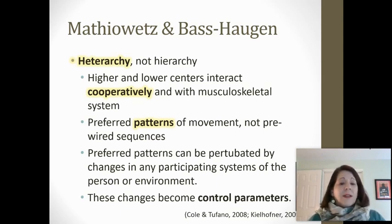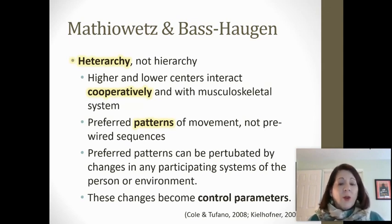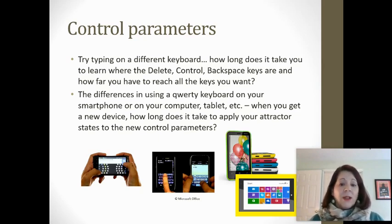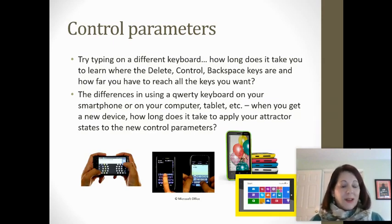The higher and lower centers of our motor system learn to interact cooperatively with our musculoskeletal system. People have preferred patterns of movement, but these preferred patterns can be perturbed or changed by anything in the environment or anything in the occupation we are choosing to do. These changes become control parameters. For example, learning to type on a different keyboard with keys in a slightly different location means learning a different set of movements — and using a QWERTY keyboard on your phone versus your computer requires using your fingers differently even though the keys are in the same location, illustrating the vast amount of brain real estate required to plan our movements.